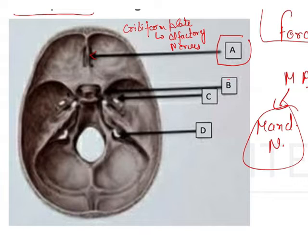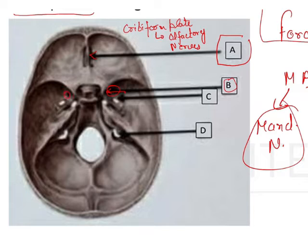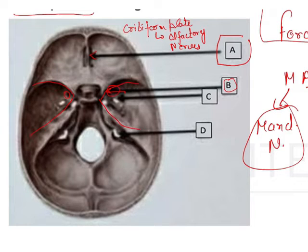Then B is there. It is pointing towards the sphenoid bone — the greater wing of the sphenoid bone that forms the middle cranial fossa. And here we have the foramina, which are remembered by the mnemonic ROS.